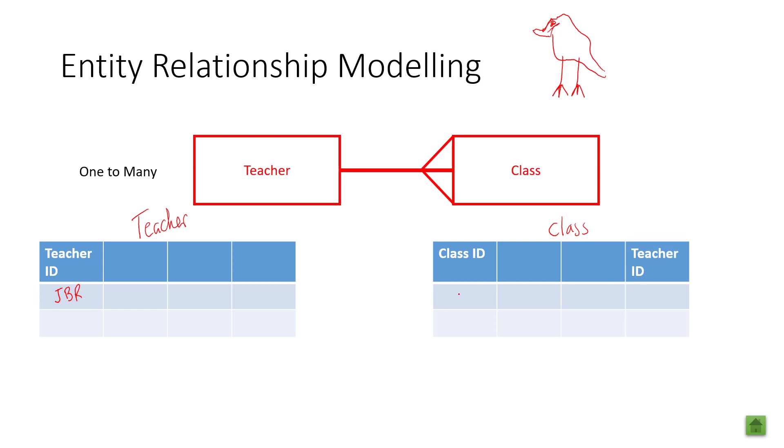For example, my teacher ID might be JBR. The class could be 001, 002. And I might teach both of those classes. That would mean that one teacher can teach many classes, but only one class is taught just by one teacher at one time.